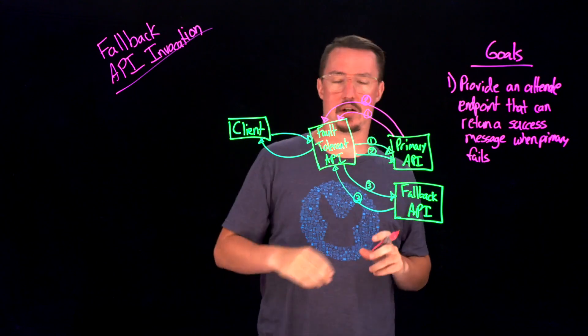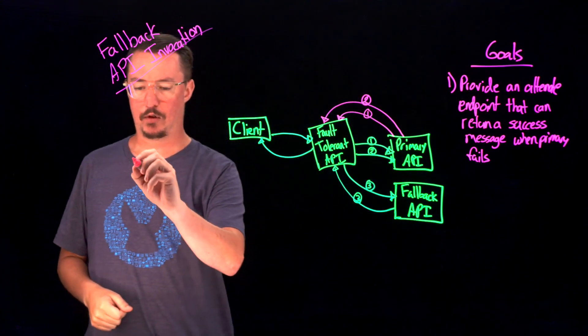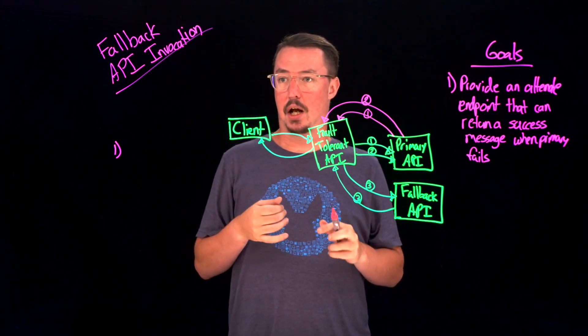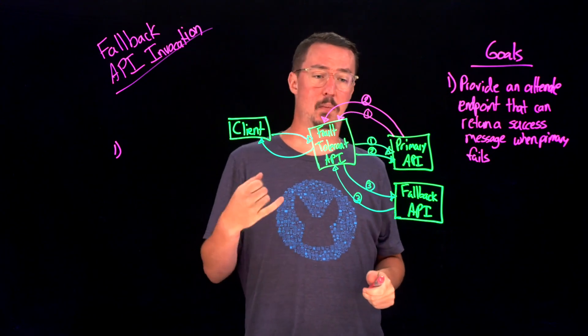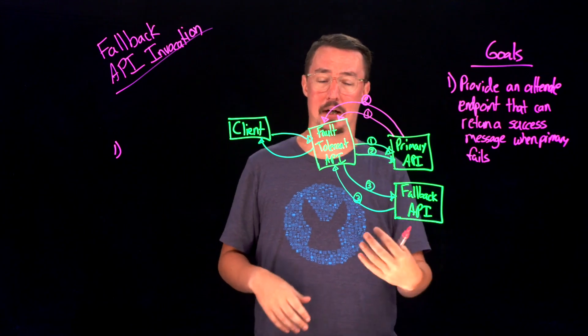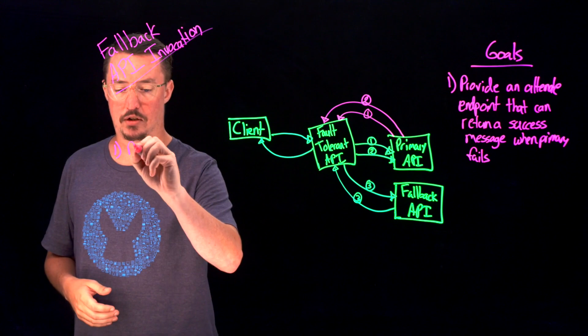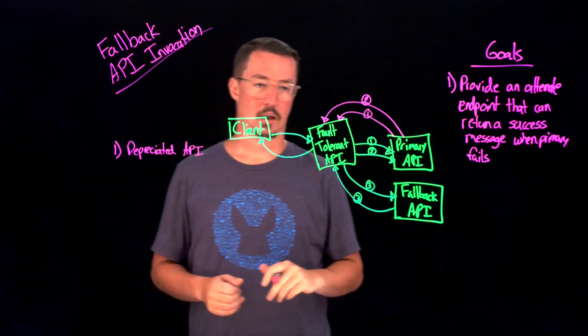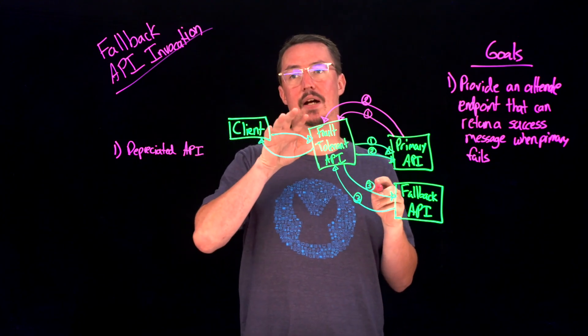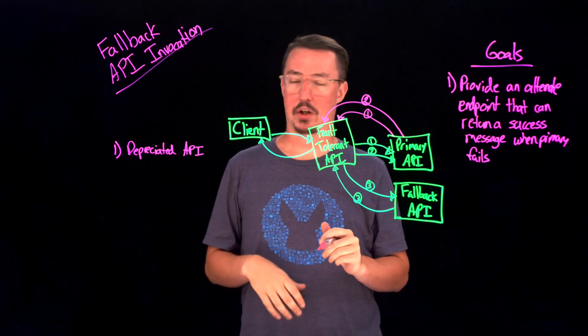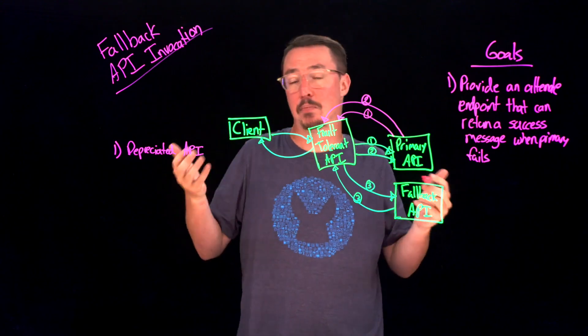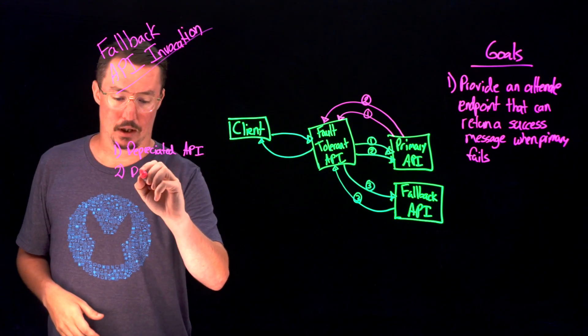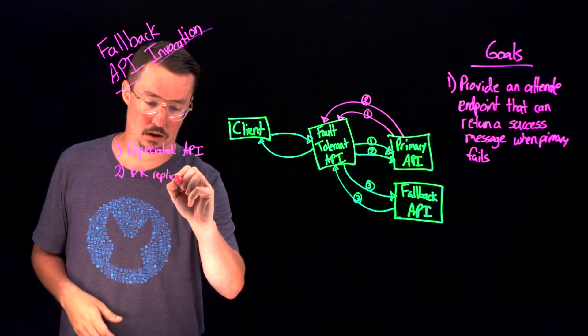Now, you might be asking yourself, what makes a good fallback API? The first thing that we can think about with a fallback API is some kind of deprecated API. This might be an API that we added some performance enhancements or some small tweaks that didn't necessarily change the data coming out of it, but we maybe made it better in other respects. Another thing that we can think about is if you have a disaster recovery site. This would be an alternate location where you have an exact replica of this primary API. This would be most ideal, but most of the time we don't always have that. So if you do have that, we would talk about a DR replica of the API.